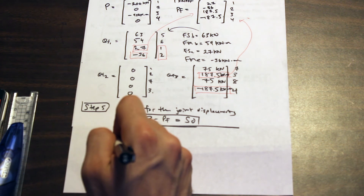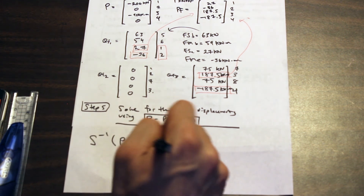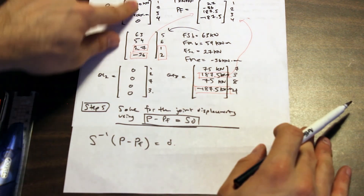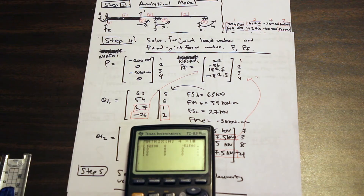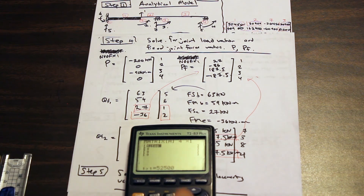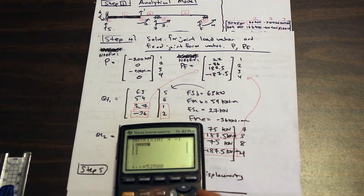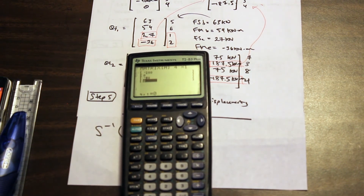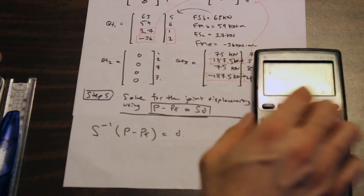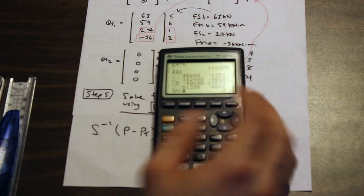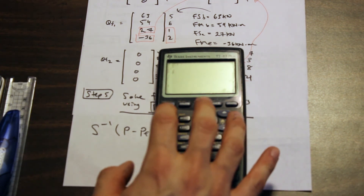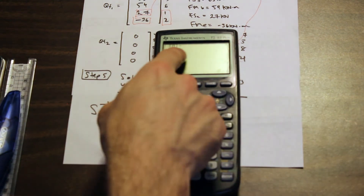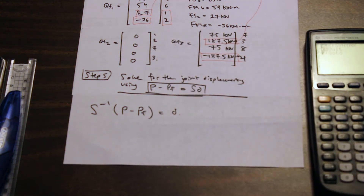In your graphing calculator, store P as a four-by-one vector. Enter the values: 200, 0, negative 90, 0. Then go to your matrix operations and compute P minus PF, and store the result. That's essentially all you need to do.